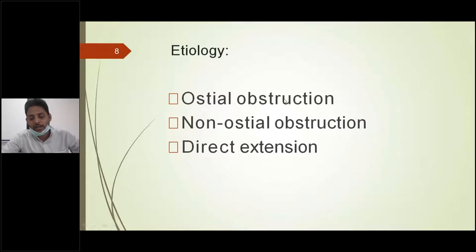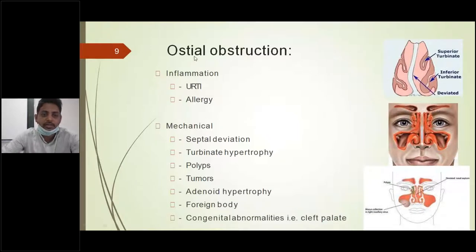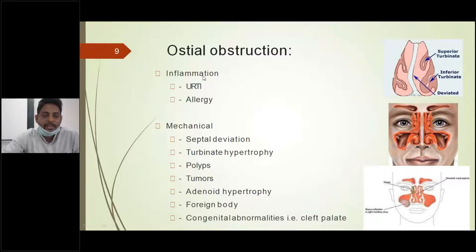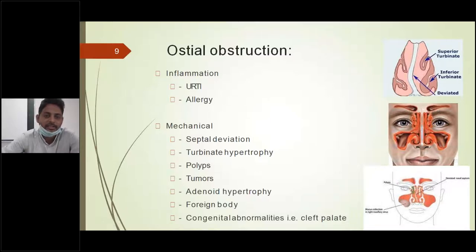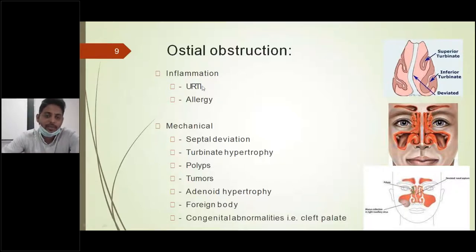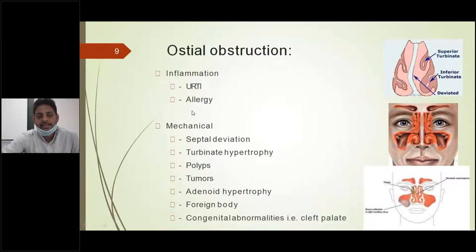The most common cause or predisposing factor for rhinosinusitis is upper respiratory tract infection, usually caused by a virus. The second most common cause is allergic rhinitis. There are different types of rhinitis — allergic rhinitis, vasomotor rhinitis — but the second most common is allergic rhinitis after upper respiratory tract infection. There will be sinonasal mucosal inflammation and edema surrounding the ostium, which blocks the respective ostia of sinuses and impairs mucosal secretions.